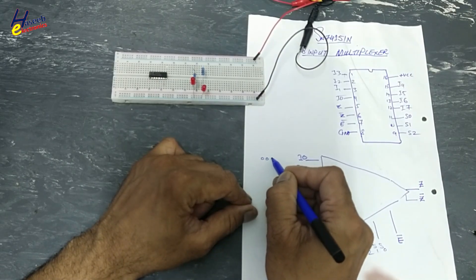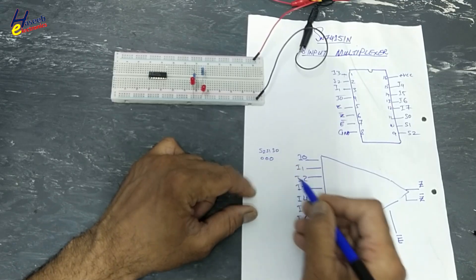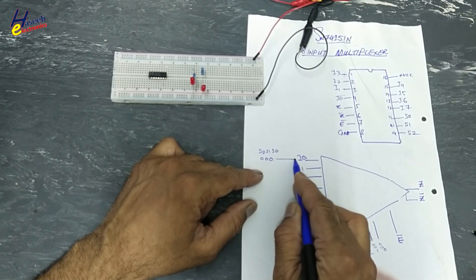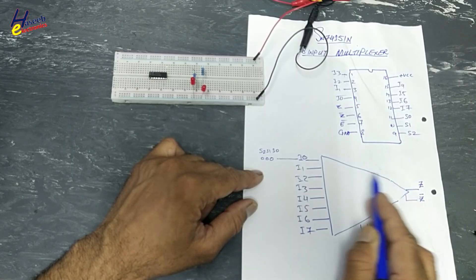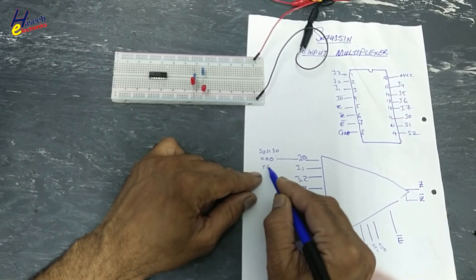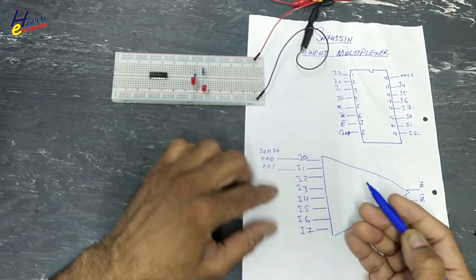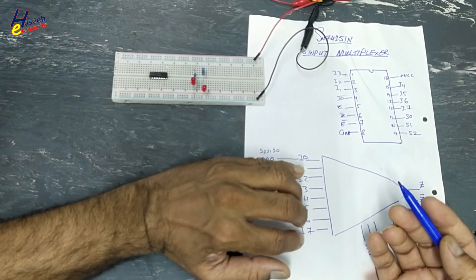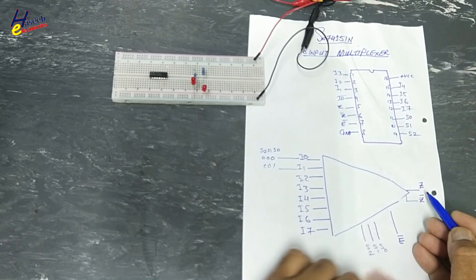Zero, zero, zero. S2, S1, S0. When three bits are low, this pin will be connected at Z. Zero, zero, one. I one will be connected here. Other signals will remain connected at input. But only this pin will reach at Z output.